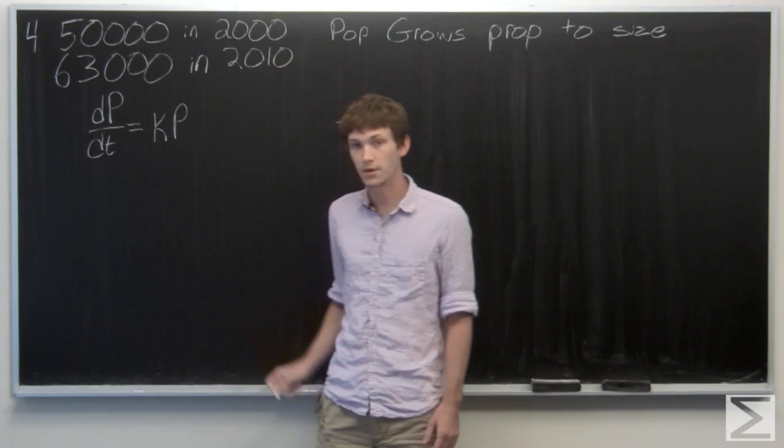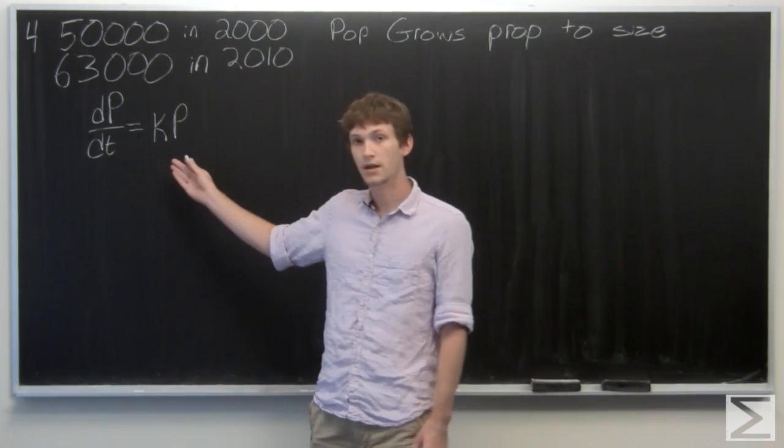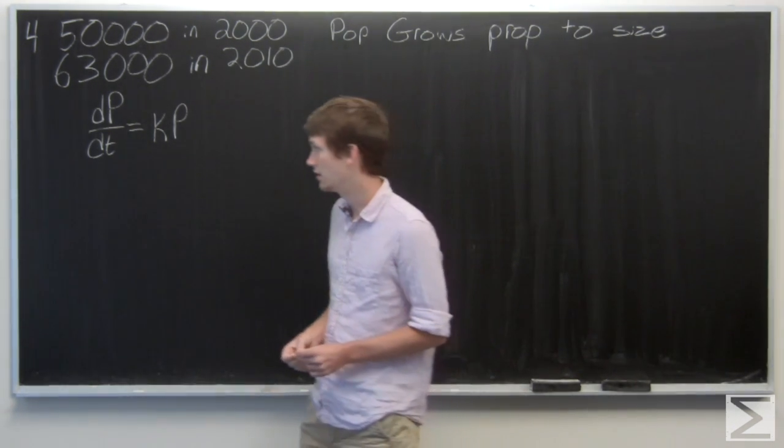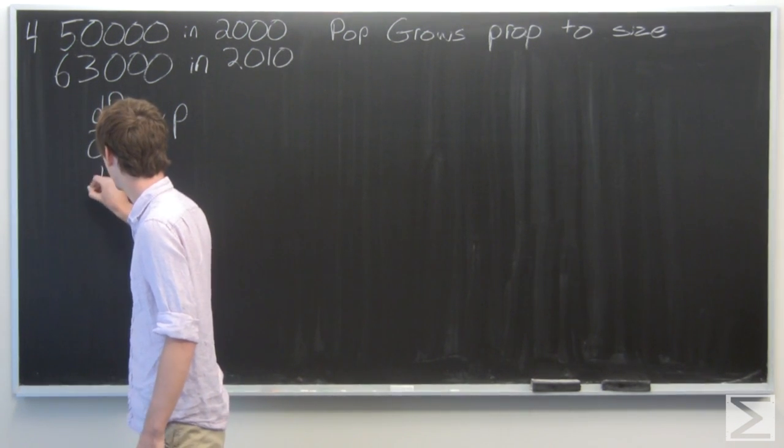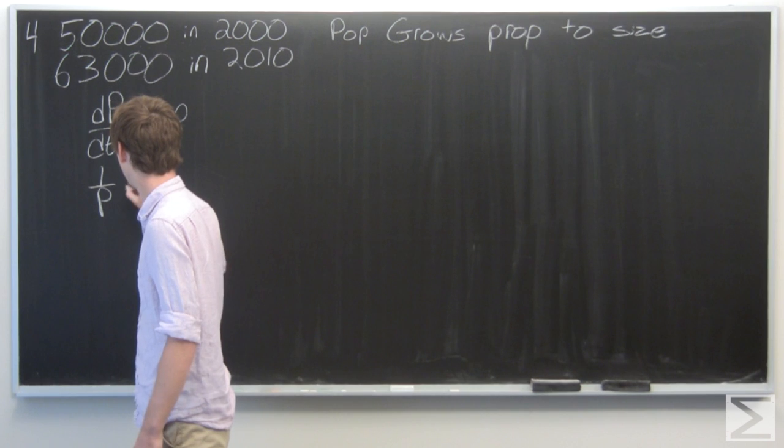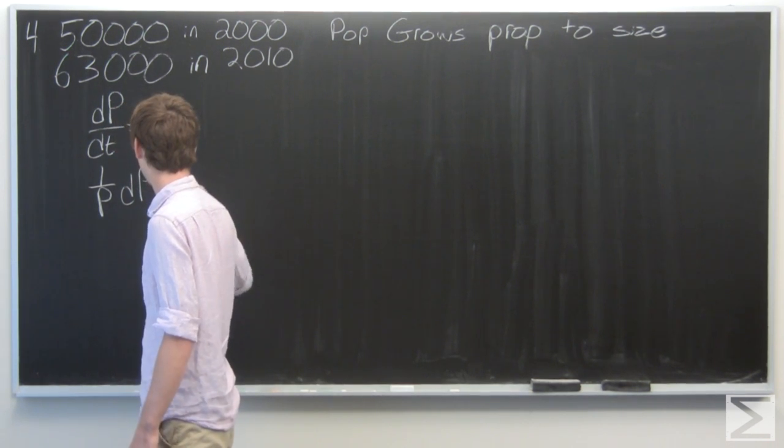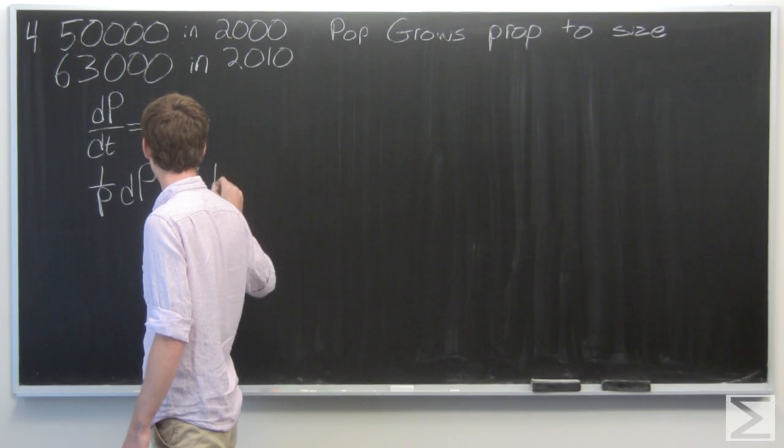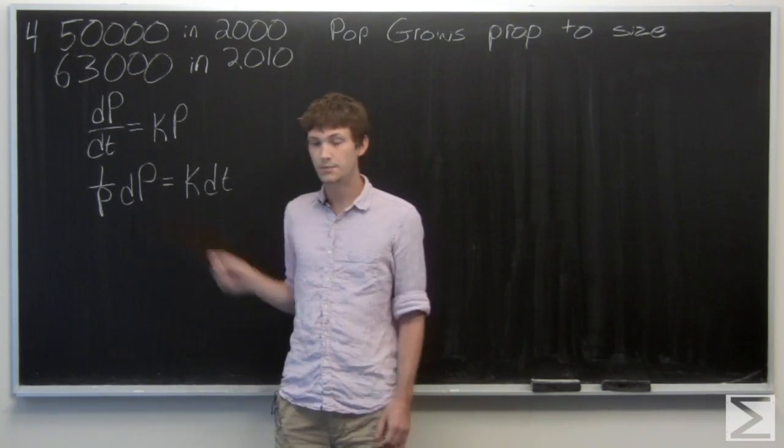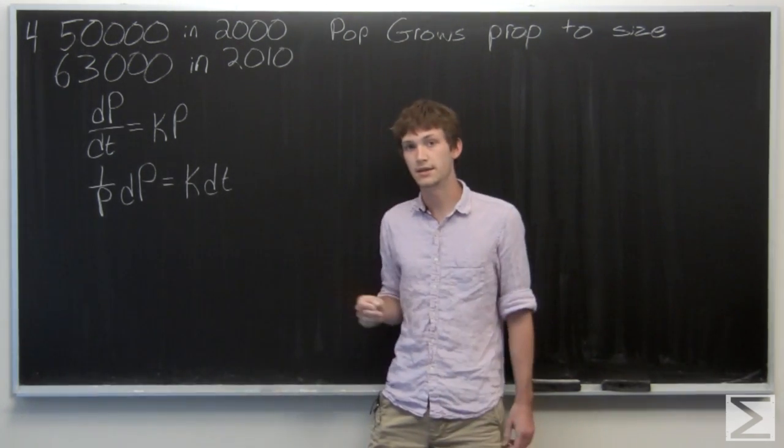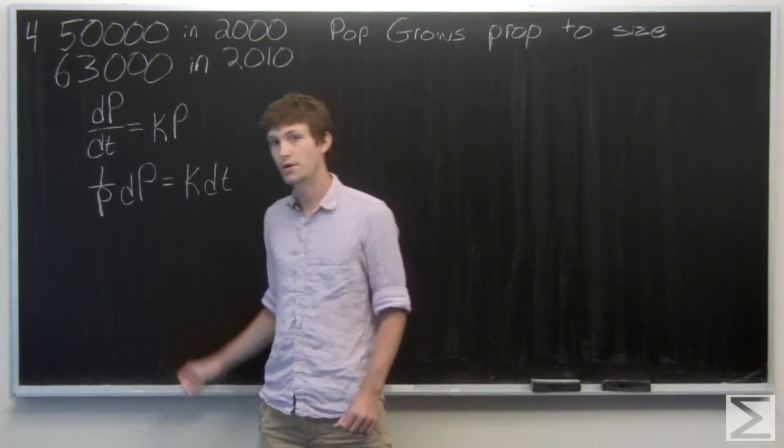Now we can separate the variables and integrate. So we get 1 over P dP equals k dt. We integrate both sides.